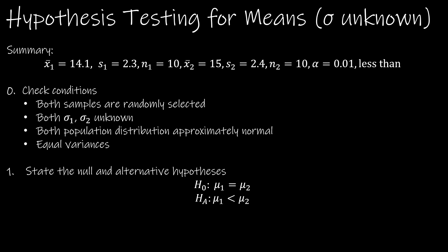Here's our summary. Check conditions. Yes, both samples are randomly selected. Both population standard deviations are unknown. We are given that both population distributions are approximately normal, even though n1 and n2 are small. We are told they're both normal, and we know they have equal variances. And then we have our null and alternative hypotheses that we've already talked about.